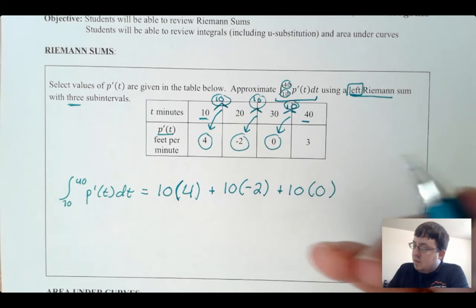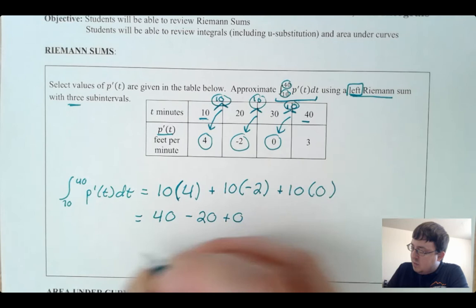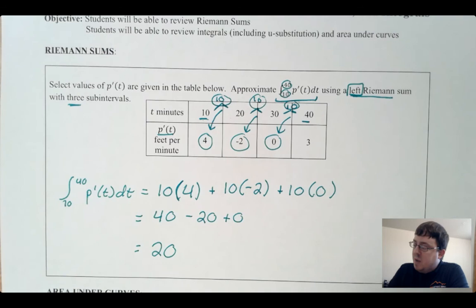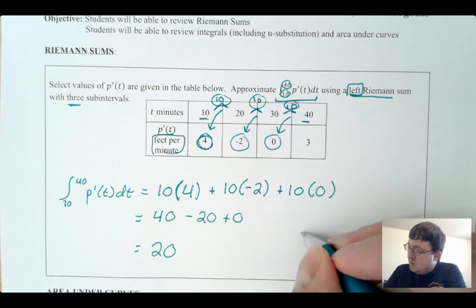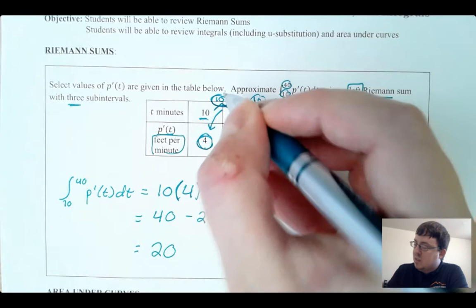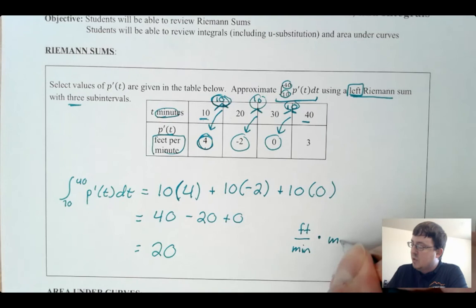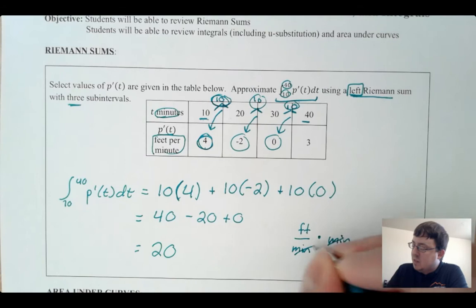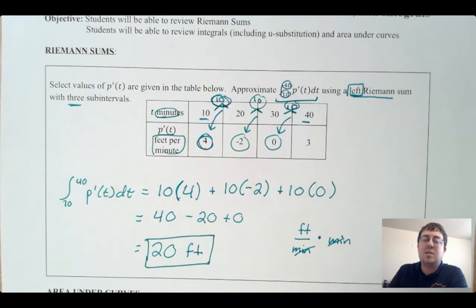To approximate the integral from 10 to 40 of p prime of t dt, that's going to be the sum of all the rectangles. The base from 10 to 20 is width 10 times height 4, plus width 10 times height negative 2, plus 10 times height 0. That gives 40 minus 20 plus 0, so the integral is approximately 20. The units: p prime is in feet per minute, multiplied by minutes, so minutes cancel and the answer comes out in feet.